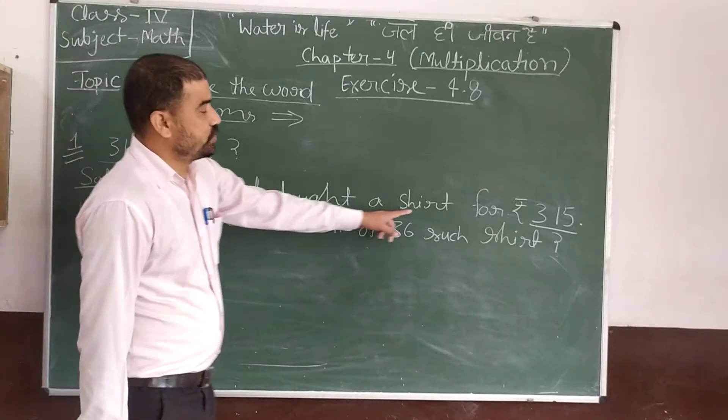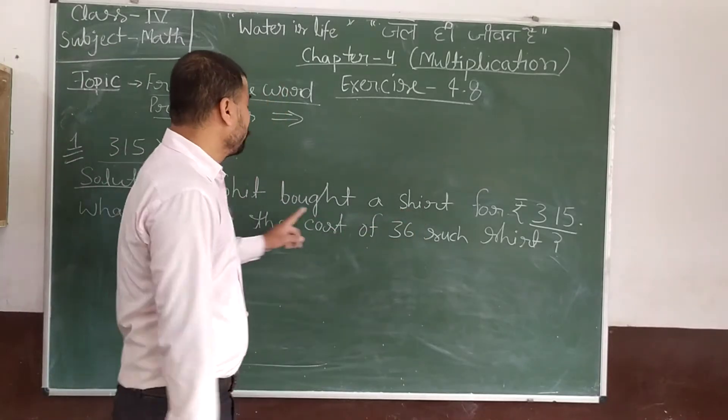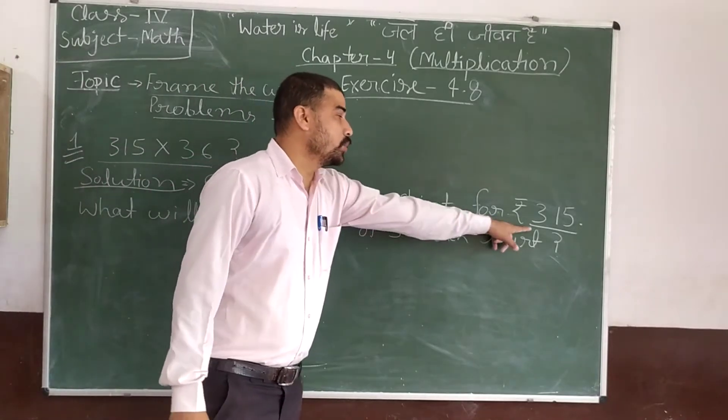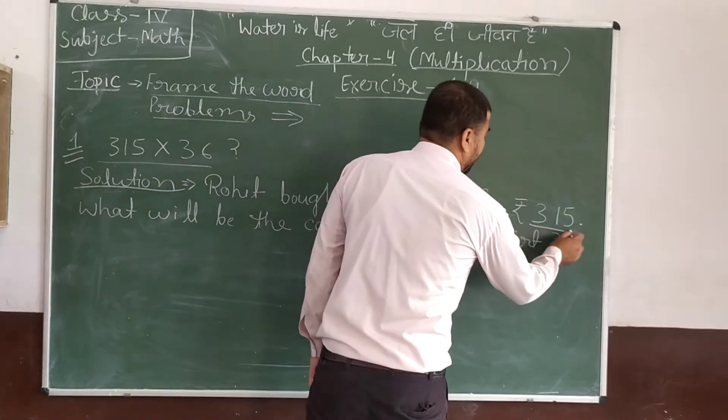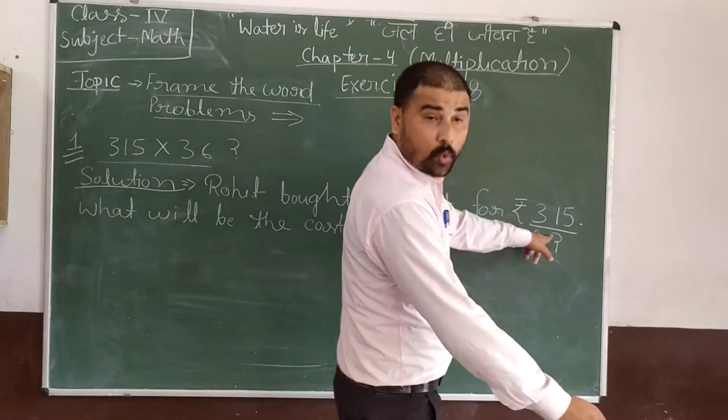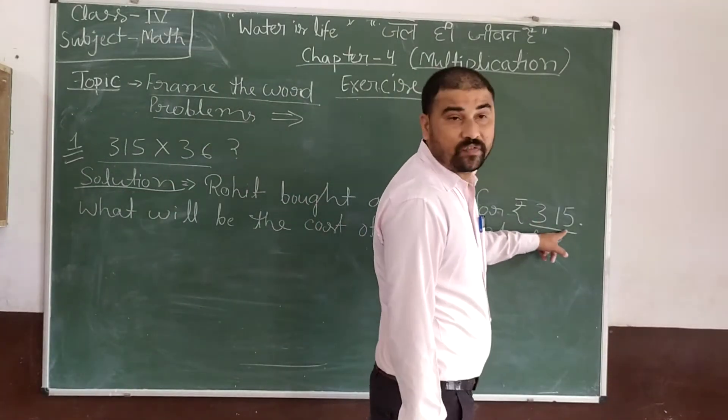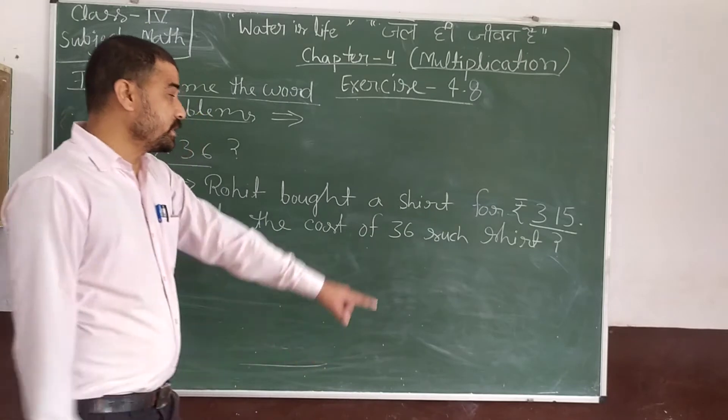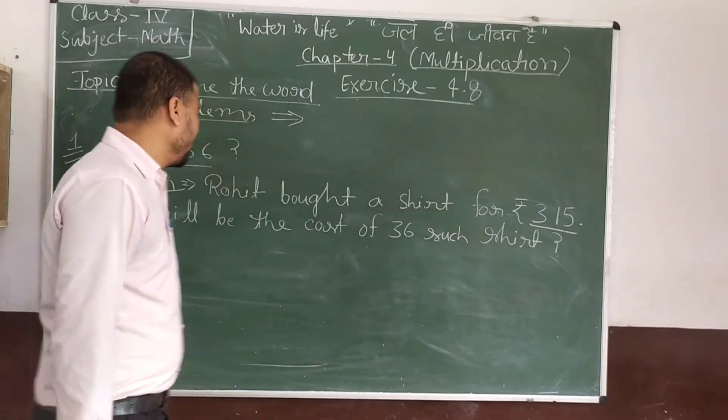Rohit bought a shirt. Rohit bought a shirt for rupees 315. So I put this number in, rupees 315. The cost of one shirt is 315.